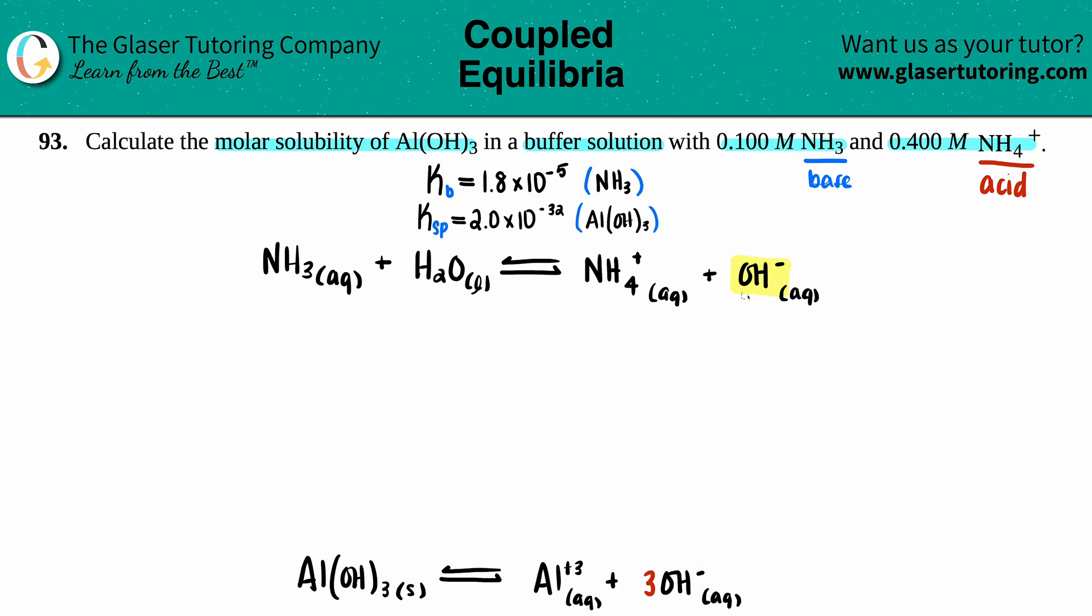They told us that we were in a buffer solution of 0.1 molarity NH₃ and 0.4 molarity of NH₄⁺. So NH₃ we could say 0.100 molarity, and for the acid you have 0.400. We just want to find out what the hydroxide ion concentration is—we don't know what that is, so I'm going to label that as x. It always matches the coefficient, so in this case since you have one OH⁻ it would just be one x.